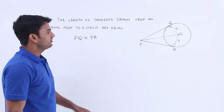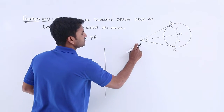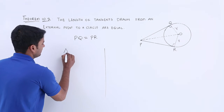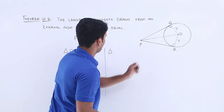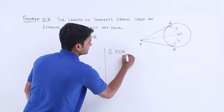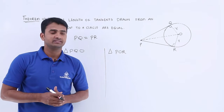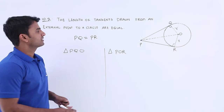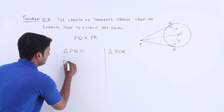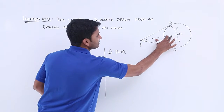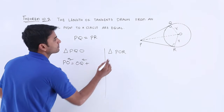If you observe properly, we have two right-angle triangles: triangle PQO and triangle POR. To prove that the two tangents are equal, we have two approaches. The first one is by using the Pythagorean theorem. Applying Pythagoras to triangle PQO, we get: PO squared (the hypotenuse squared) is equal to OQ squared plus PQ squared.